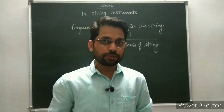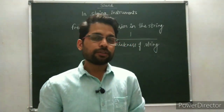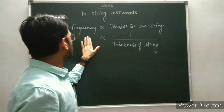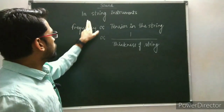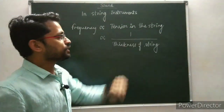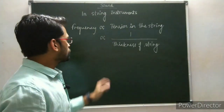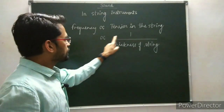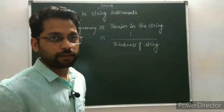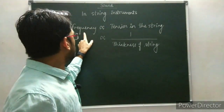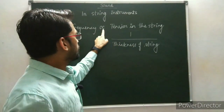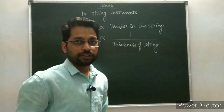Now I am going to show an activity to illustrate these relations. In string instruments, the frequency is directly proportional to the tension in the string, and also inversely proportional to the thickness of the string. Let's start with the first relation: frequency is directly proportional to tension.